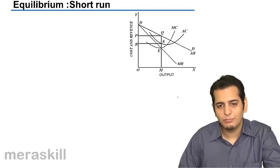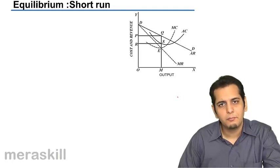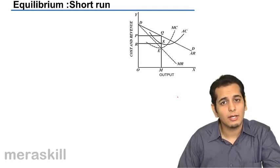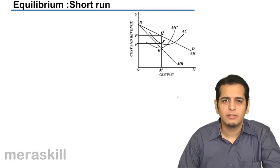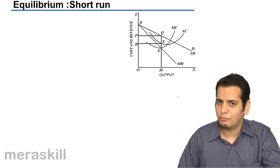Now, let's see how a firm achieves equilibrium under short run in the monopolistic competition. Our conditions remain the same as they were in perfect competition and monopoly.